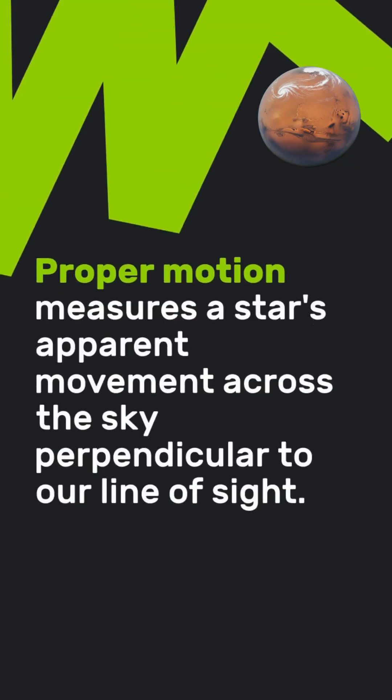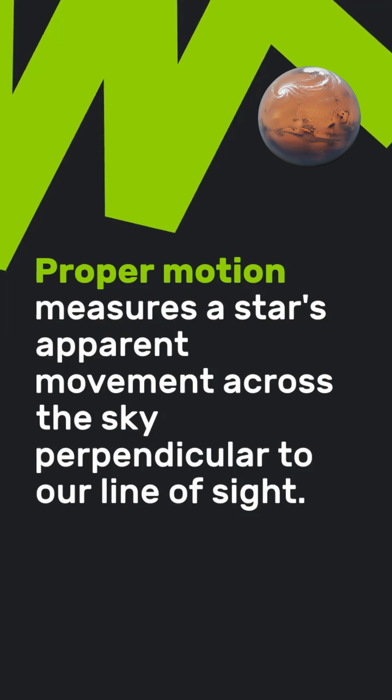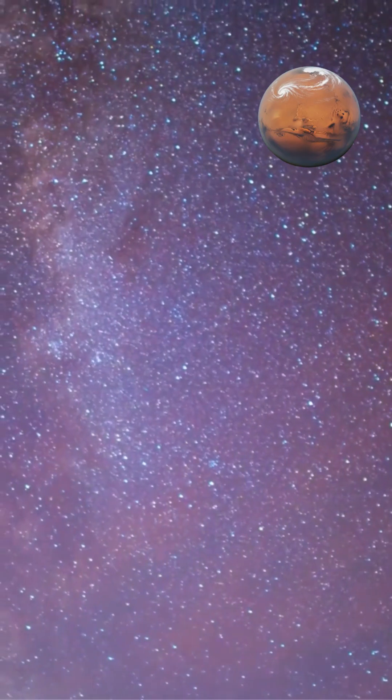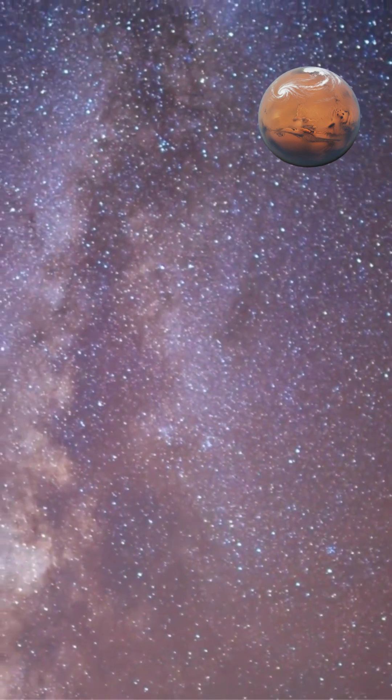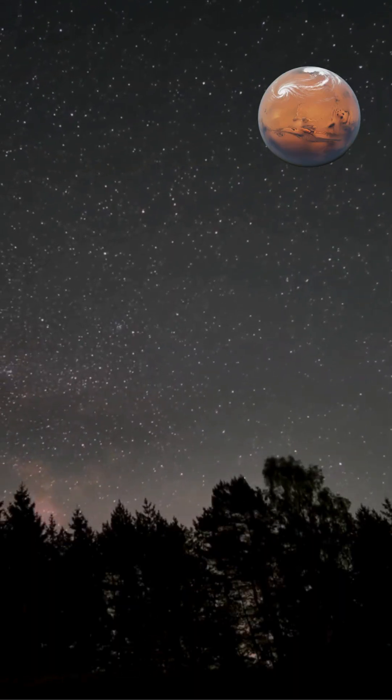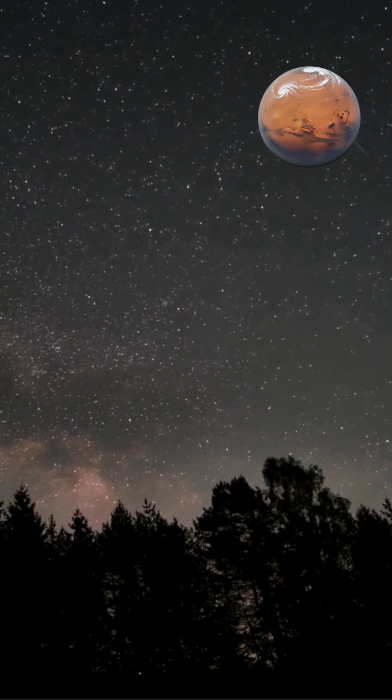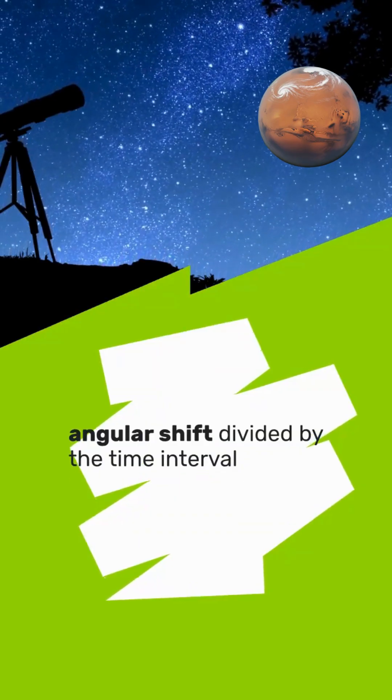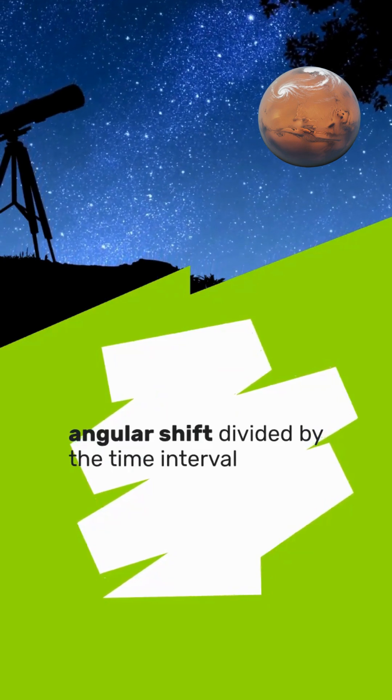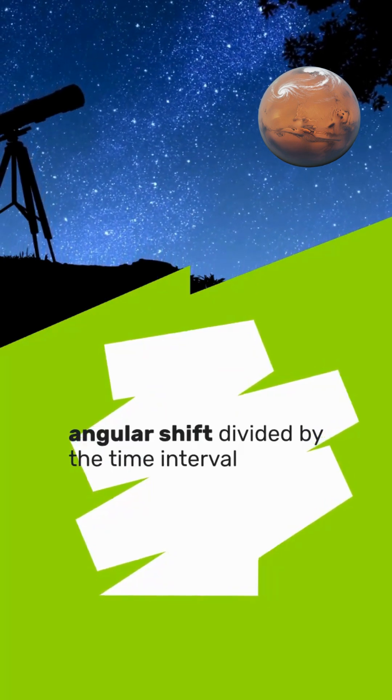Proper motion measures a star's apparent movement across the sky perpendicular to our line of sight. Astronomers photograph the same region of sky at intervals spanning years or decades, then carefully measure each star's position change against the background of more distant stars. The angular shift, divided by the time interval, yields proper motion measured in arc seconds per year.